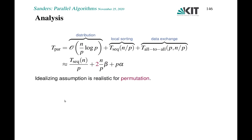Each processor ends up with one bucket of elements larger than everything on smaller-numbered processors and smaller than everything on larger-numbered processors, and it just has to locally sort the received data. Importantly, data is communicated only once. Let's analyze this algorithm.